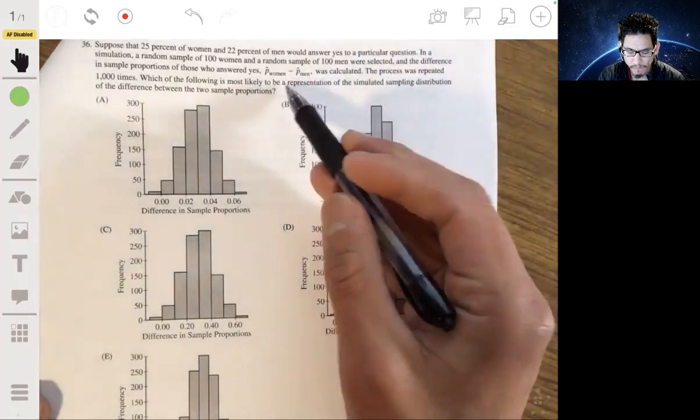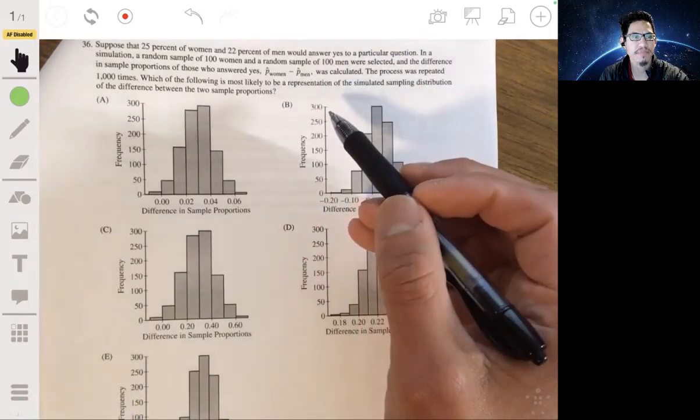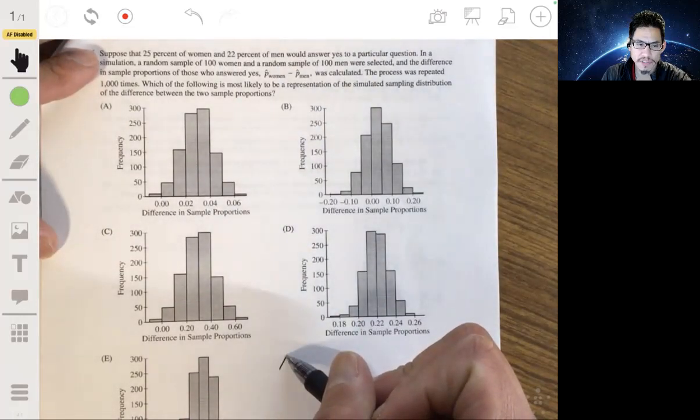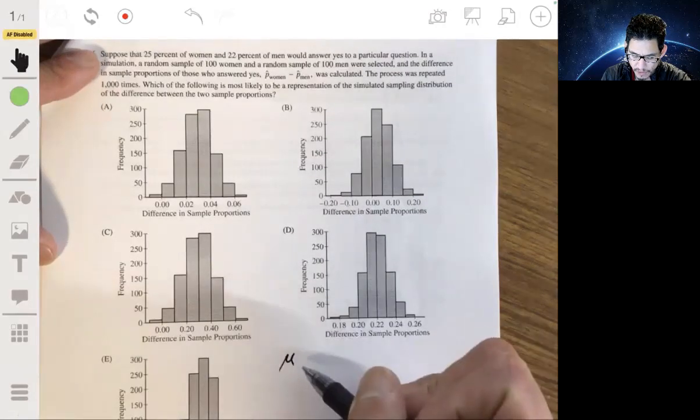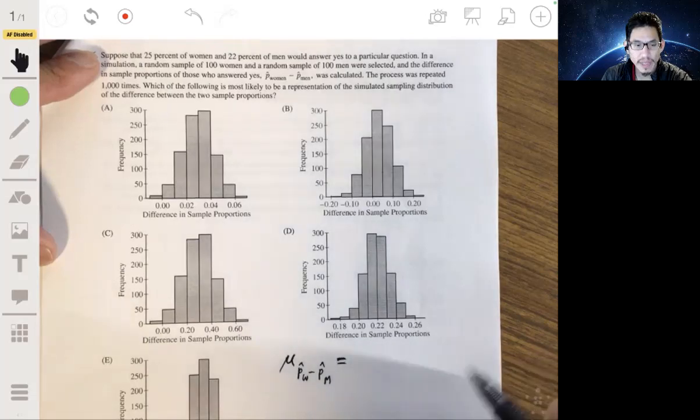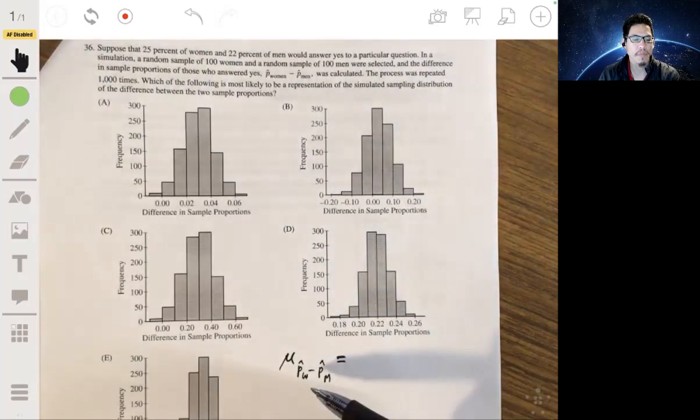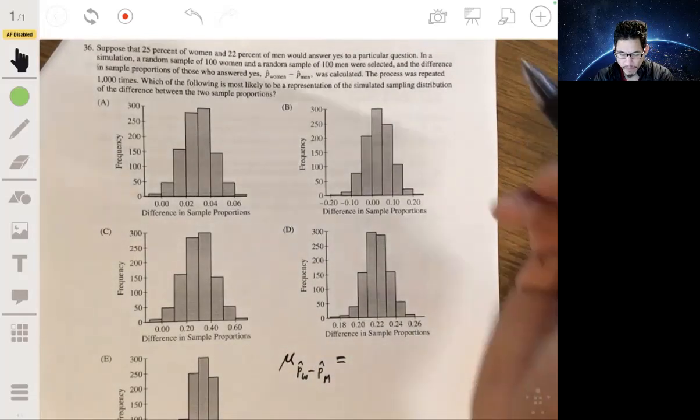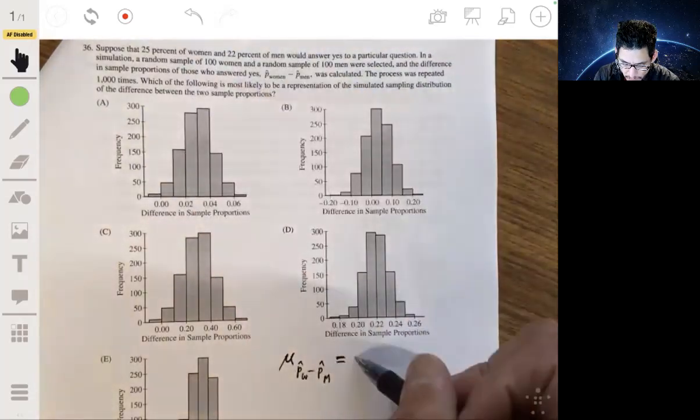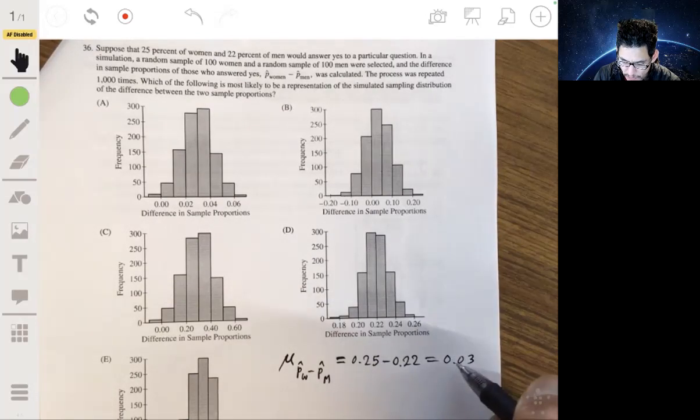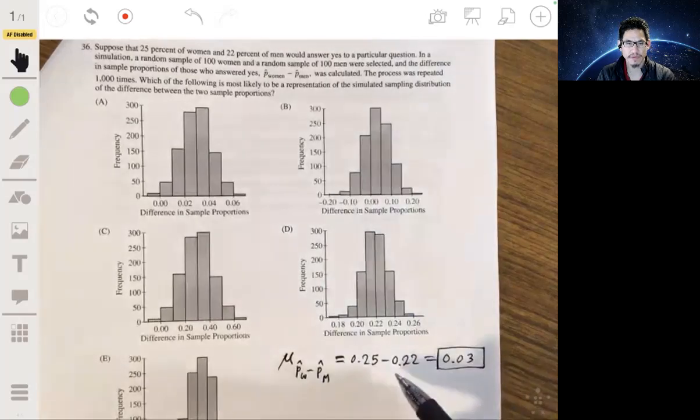Okay, so remember, since we have a distribution, we want to look at the mean and standard deviation. So we're doing the proportion of women minus the proportion of men. So we would have mu sub p hat w minus p hat m, and that would just be equal to the mean, which is 0.25 minus the sample proportion of men, which is 0.22. So this will be 0.03. So this will be the mean of the sampling distribution of the differences.